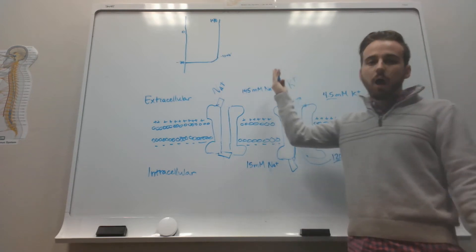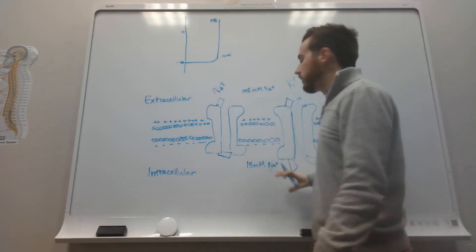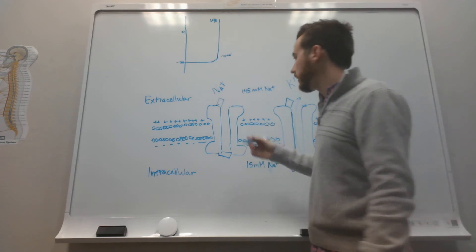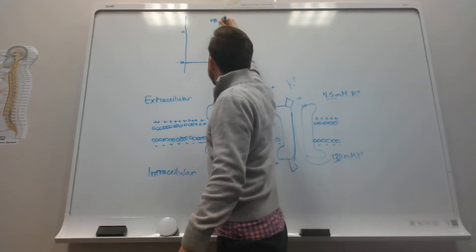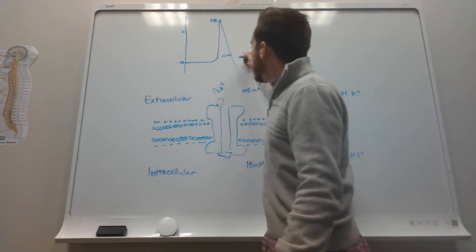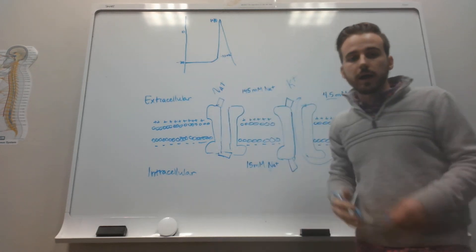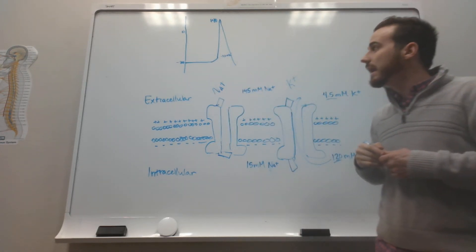If you're taking positive charges out of the cell, that means the inside of the cell is going to become more negative. And it approaches the equilibrium potential for potassium, which is negative 80 millivolts.